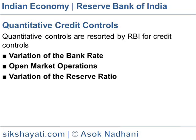When the cash reserve ratio is raised, banks have to keep more money with the central bank and they can lend less. When the reserve ratio is lowered, they can lend more. Thus, by varying the reserve ratio, the central bank can increase the volume of credit in the country. When the deficit financing increases, the RBI increases CRR to cause excess liquidity.